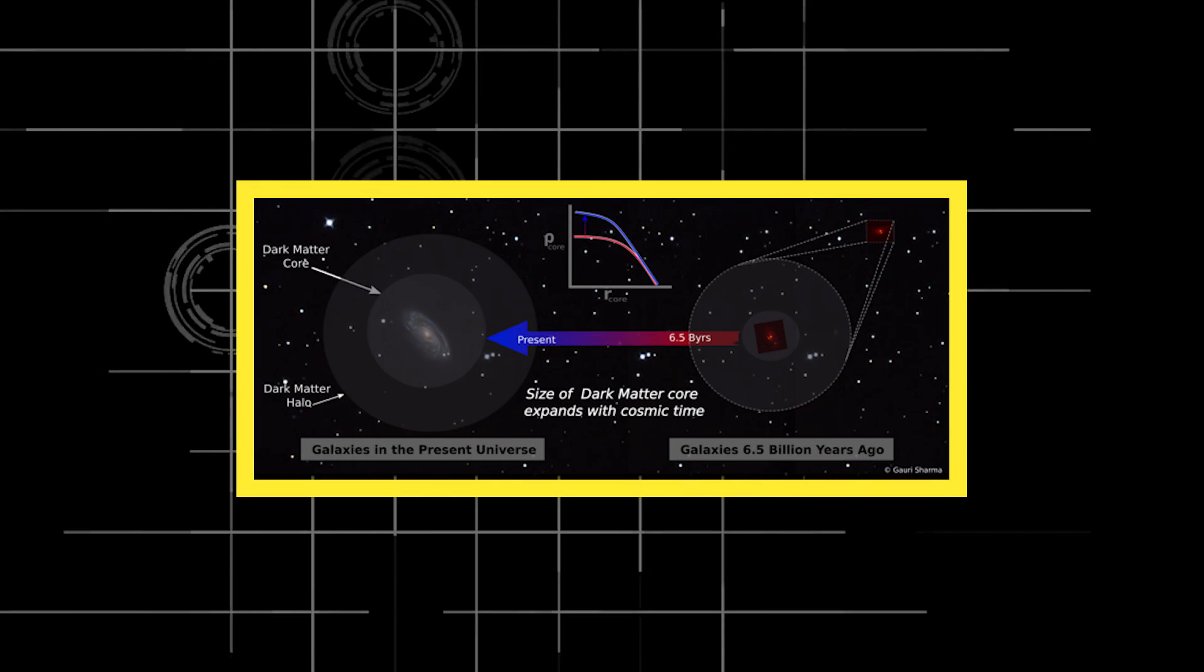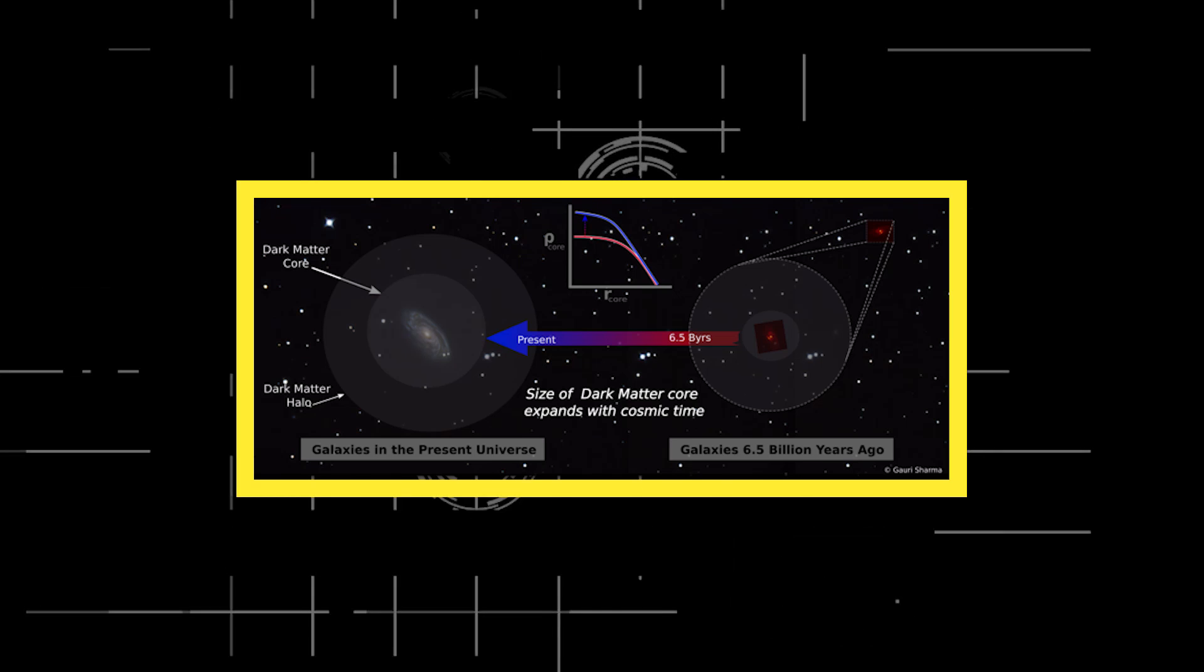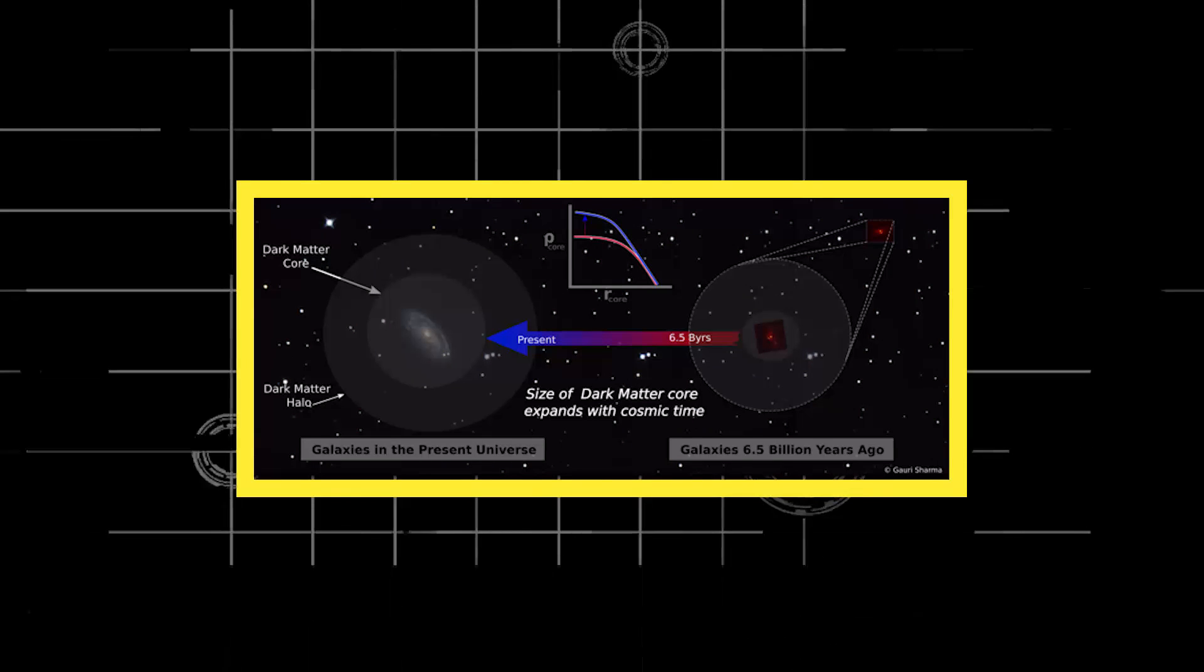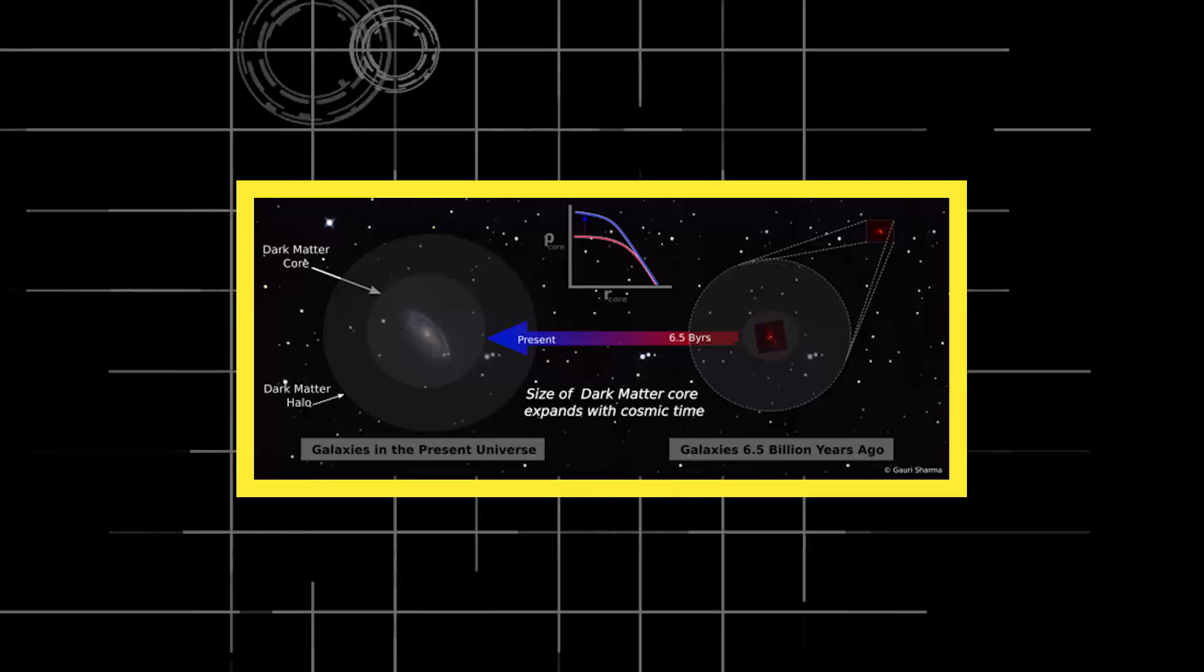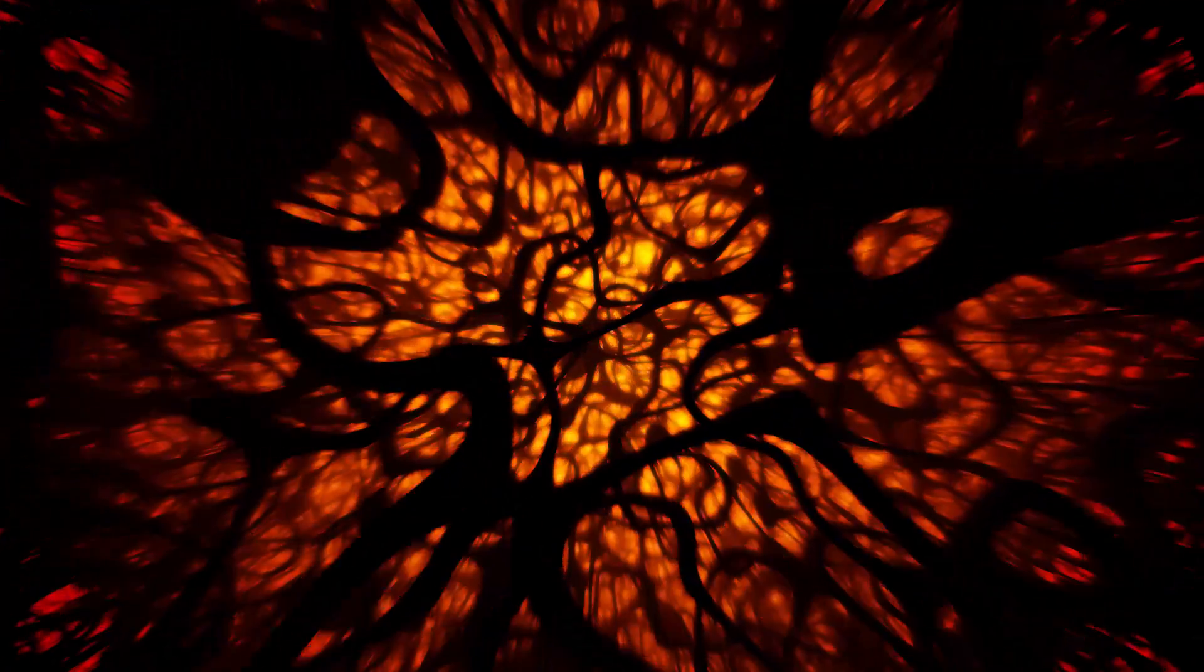A surprise finding, however, was that these halos are much more compact than those galaxies closer to our Milky Way. This suggests that the distribution of dark matter within a galaxy expands slowly over time. But how is this process powered?